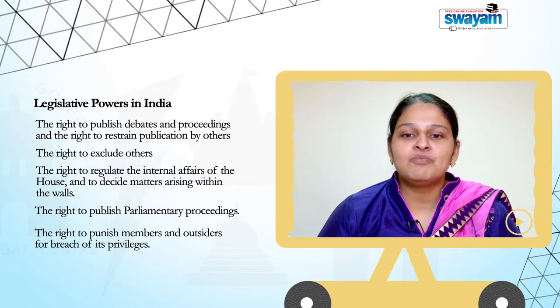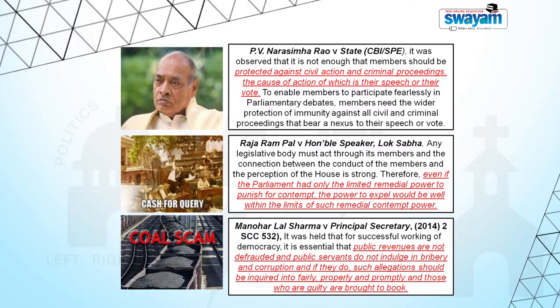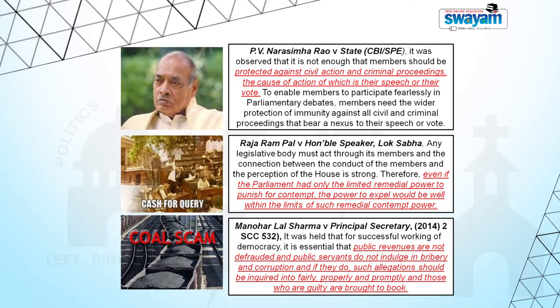Fifth, the right to punish members and outsiders for breach of its privileges. In PV Narasimha Rao v. State, it was observed that it is not enough that members should be protected against civil action and criminal proceedings the cause of action of which is their speech or vote. To enable the members to participate fearlessly in parliamentary debates, members need the vital protection of immunity against all civil and criminal proceedings that bear access to their speech or vote.